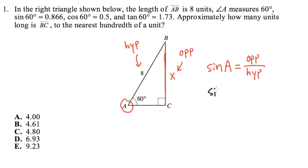So sine of angle A—A is 60 degrees—this is equal to the opposite side. We don't know it, but I called that x, so let me put down x over the hypotenuse, which is 8. So I'll put down 8 right here. Is there anything we can do?